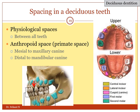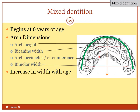The deciduous dentition is unlike the permanent dentition — there are spacings seen between each and every tooth. This is called physiological spaces. This is mainly required because the permanent dentition are much bigger than the deciduous dentition. The permanent successors below each deciduous tooth, when they erupt, require enough space to come into occlusion properly. This anthropoid space is important for proper occlusion. The physiological spaces are between each tooth, and the anthropoidal space is seen typically between the canine and the lateral incisor in the maxillary arch, and distal to the mandibular canine in the mandibular arch. These compensate for the larger size of the permanent teeth.